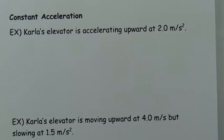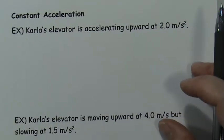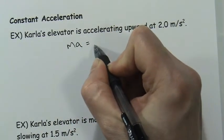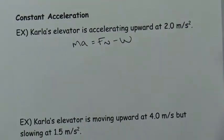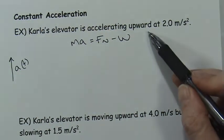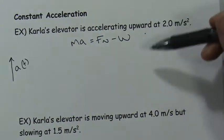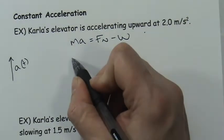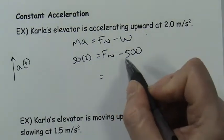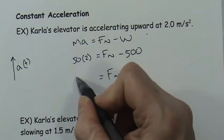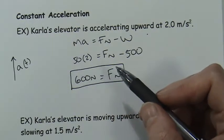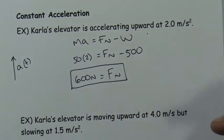Imagine we're at the bottom of the building and Carla steps on the elevator, which begins to accelerate upward at 2.0 m/s². Using the equation of motion with positive acceleration: 50 × 2 = F_N − 500. Adding 500 to both sides gives F_N = 600 newtons — quite a bit more than normal due to the positive upward acceleration.